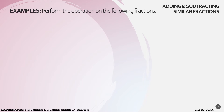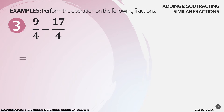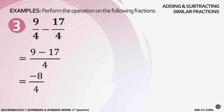Let's have examples for subtraction. Let's say we have 9 over 4 minus 17 over 4. Since they are similar fractions, we will just subtract the numerators: 9 minus 17, and then copy the denominator, 4. 9 minus 17 is negative 8 over 4. Simplify our answer. We got negative 2.